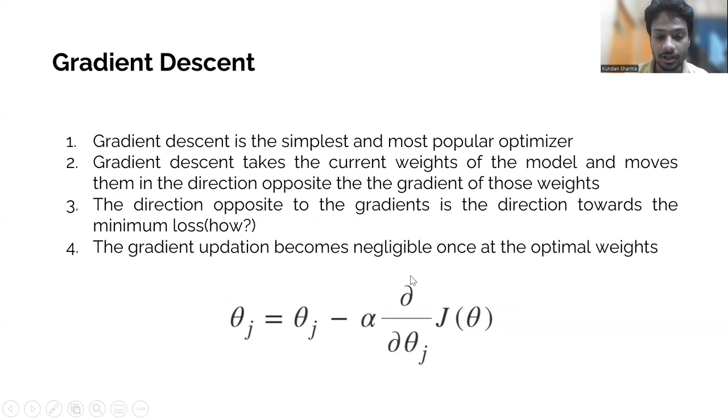If this particular gradient is positive, then that means that our weights would move to the left of the graph. And if this particular gradient is negative, then that means that our weights would move to the right side, since negative and negative would make it a positive sign.